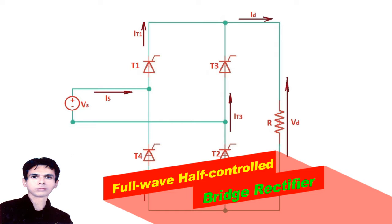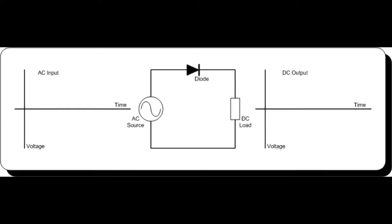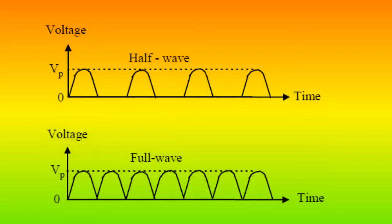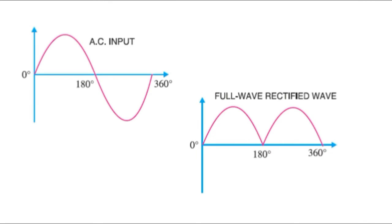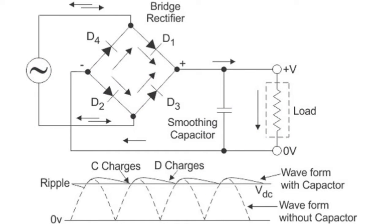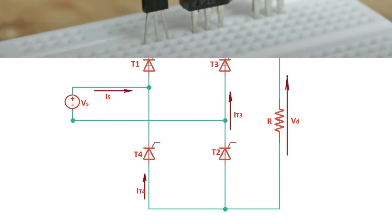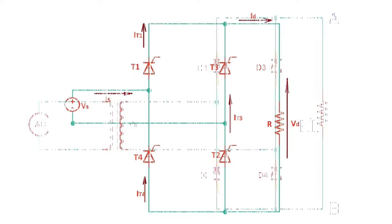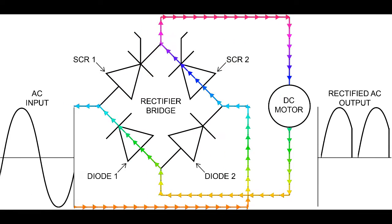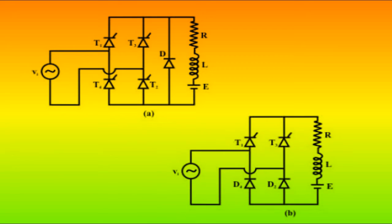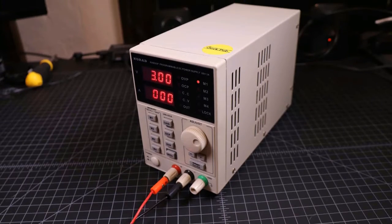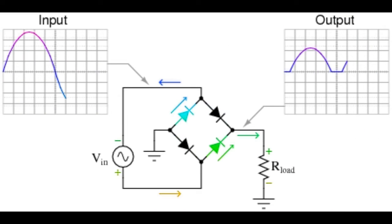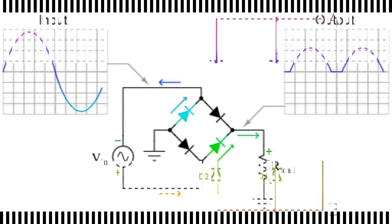Full-wave half-controlled bridge rectifier: full-wave rectification has many advantages over the simpler half-wave rectifier, such as a more consistent output voltage with a higher average output voltage, the input frequency is doubled by the process of rectification, and it requires a smaller smoothing capacitor. We can improve on the design of the bridge rectifier by using thyristors instead of diodes, replacing the diodes within a single-phase bridge rectifier with thyristors to create a phase-controlled AC-to-DC rectifier for converting the constant AC supply voltage into a controlled DC output voltage. The single-phase bridge rectifier is termed an uncontrolled rectifier in that the applied input voltage is passed directly to the output terminals providing a fixed average DC equivalent value.